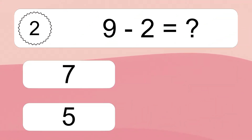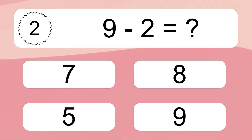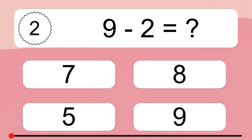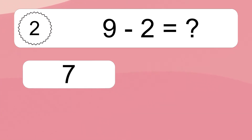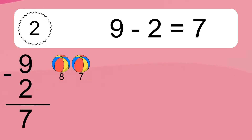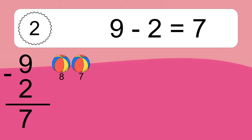9 minus 2 equals what? 9 minus 2 equals 7. Let's count it: 8, 7.